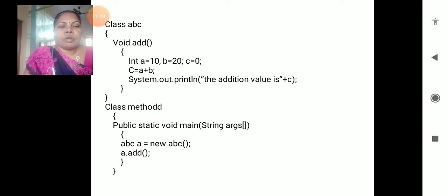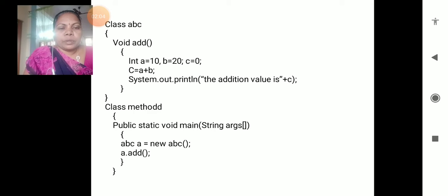For the creation of the object: a is equals to new ABC. Here, a is a variable - this is the instance variable. ABC is the class name, a is the instance variable.